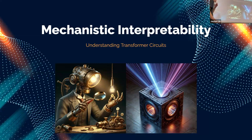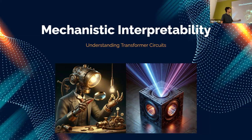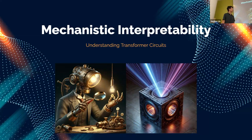We're going to take a look inside transformer circuits to understand why transformers exhibit the behavior they do. This branch of alignment research is called mechanistic interpretability. The idea is to look inside the black box of transformers, look at their individual components, and unveil what the internal workings of a transformer are.